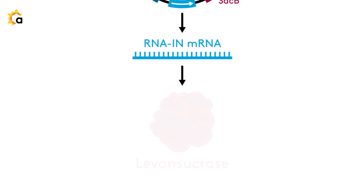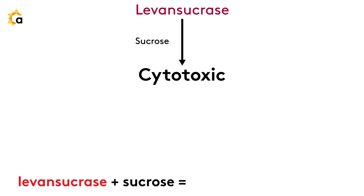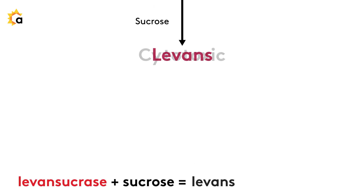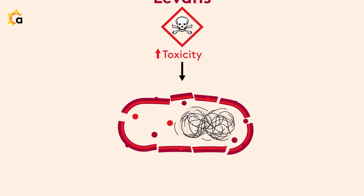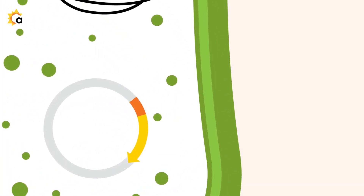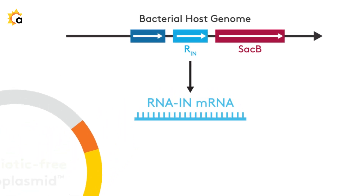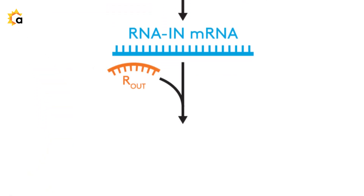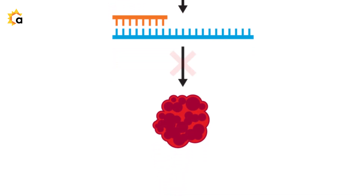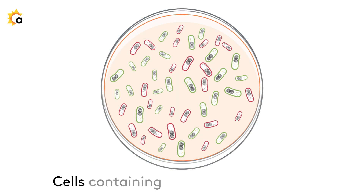Here's how the NanoPlasmid antibiotic-free selection system works. Our proprietary E. coli host strain expresses the sacB gene, which is used to produce levansucrase, an enzyme that reacts with sucrose to produce a cytotoxic byproduct for bacteria. Levansucrase produces levans, which are fructose polymers toxic to bacteria. Successfully transformed cells contain the NanoPlasmid vector.